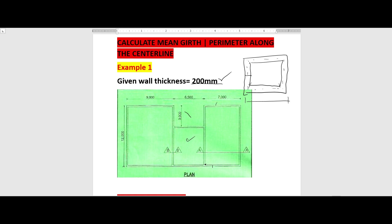Looking at the plan, we have this opening here, so we need to get the entire full length from this point up to this point, and we add these walls. We take this wall here, put it here, and transfer it so that we can assume we have a full length. What remains is this wall and this wall — from this point inside up to this point — so that will be 12,000 minus 200 minus 200, giving us 11,600. Those are the recessed walls, and there are two of them.